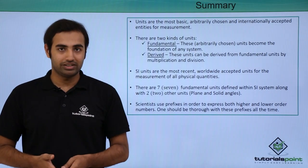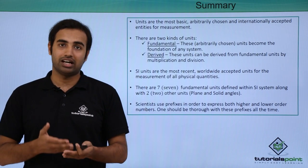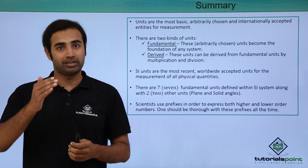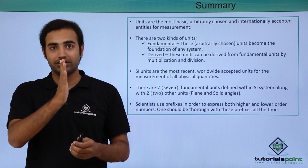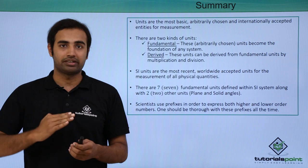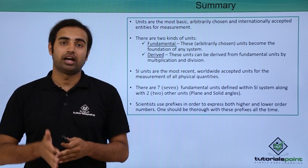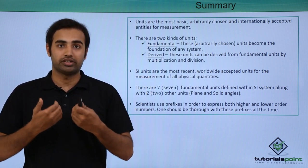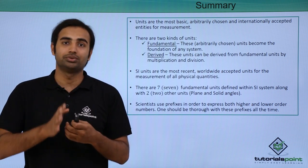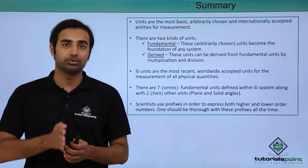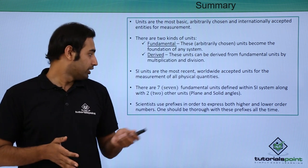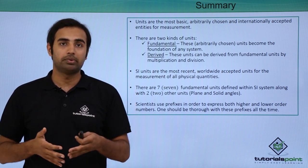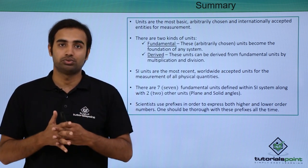To summarize: units are the most basic, arbitrarily chosen and internationally accepted entities for measurement. There are two kinds — fundamental and derived. Fundamental units are arbitrarily chosen but become the foundation of the metric system, and every other unit is derived from them. SI units are the most recent worldwide accepted units, with seven fundamental and two supplementary units — plane angle and solid angle. Scientists use multiple prefixes to express different orders of magnitude, and you must remember them.